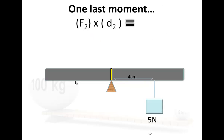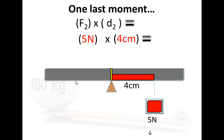And one last one just for a laugh. There's 5 multiplied by the 4 centimetres and that is 20 newton centimetres. You can also use newton metres — that's fine too — and that would be like 0.2 or something.